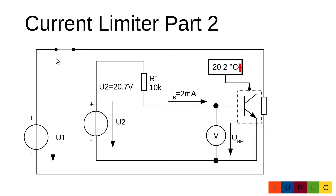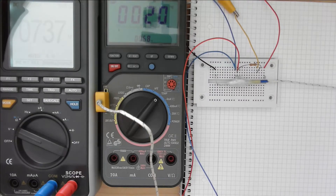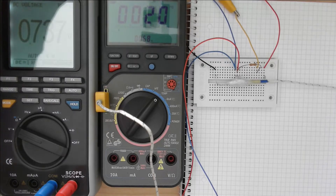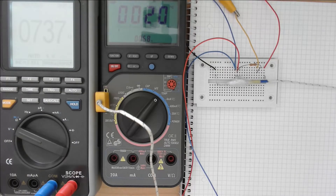At 20°C (68°F), we measure a base-emitter voltage of 0.737 V. In our second measurement, we turn on the heating resistor, which will warm up the transistor. We expect the base-emitter voltage to decrease. The heating resistor is now switched on and, due to the long warm-up process, the result is shown in time-lapse.